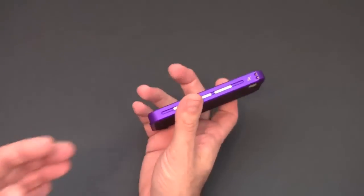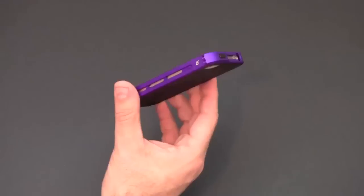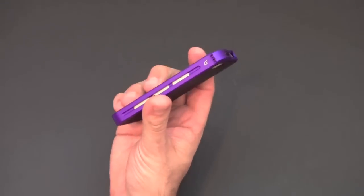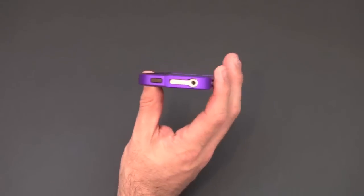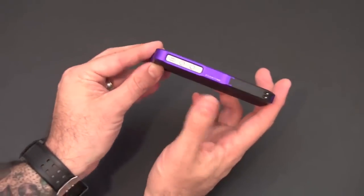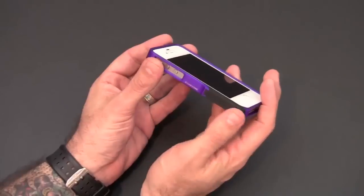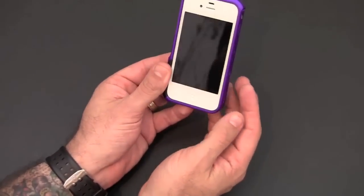So let me show you the all new flux finish up close. What this does is give this case that satiny look without changing the color of the case itself. You can just see how vibrant and popping that purple color is teamed up with the black polymer insert here right along the iPhone 4s antenna band.